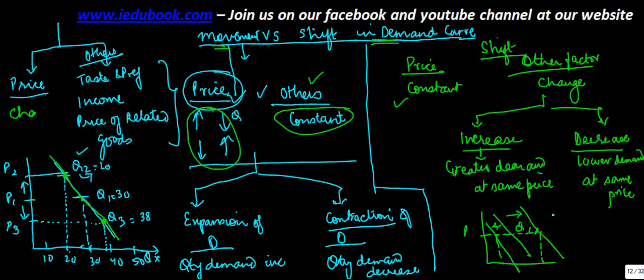So this is basically represented by a different curve which moves towards the right or the left, whereas in case of movement of demand curve, it was happening along the same curve.